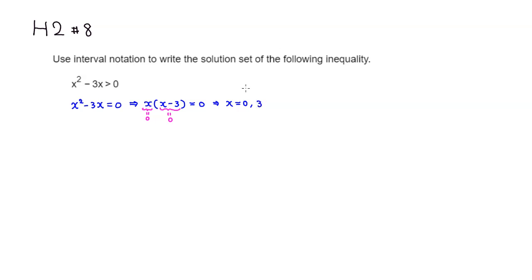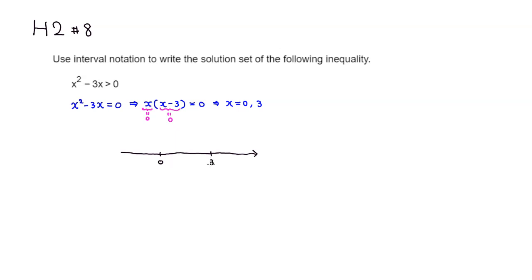Now we're going to use these solutions to place tick marks on a number line. Draw a number line — it doesn't have to be to scale. We have two numbers, 0 and 3, so put the smaller number on the left and the larger on the right.